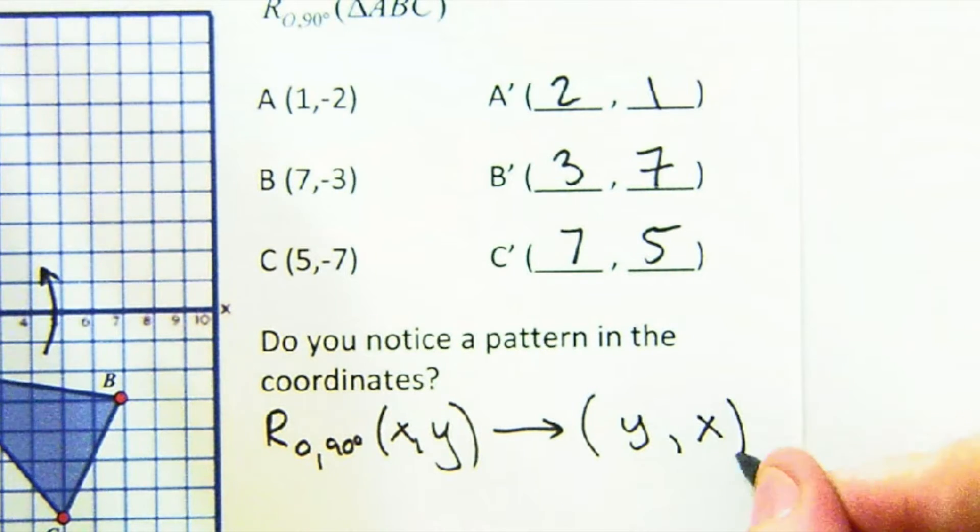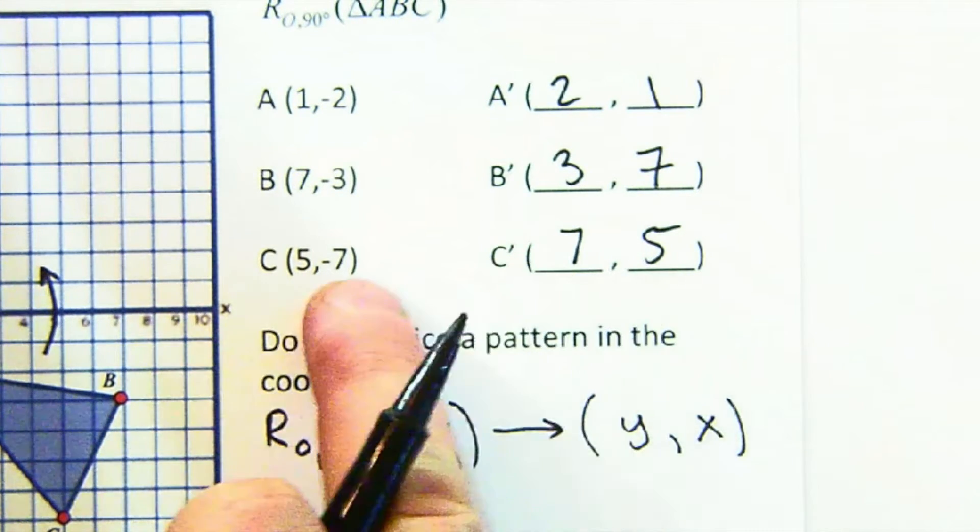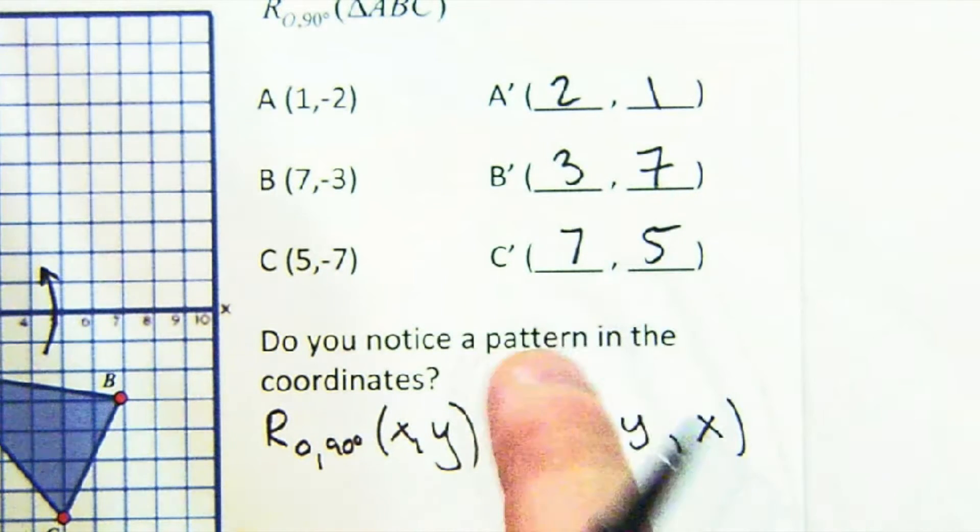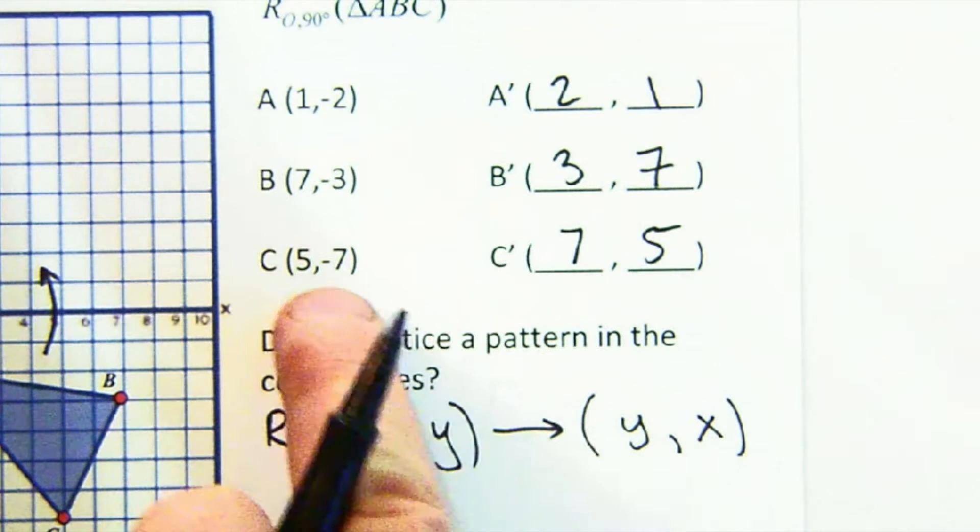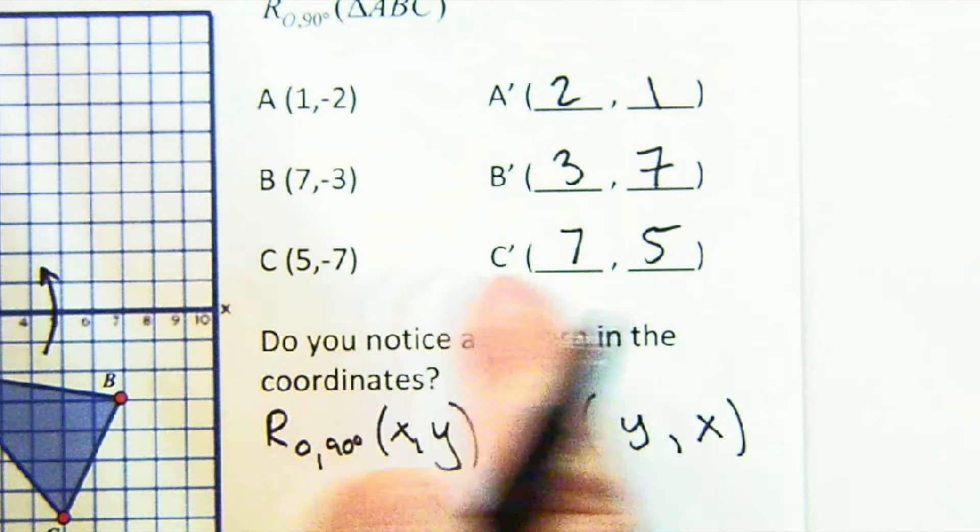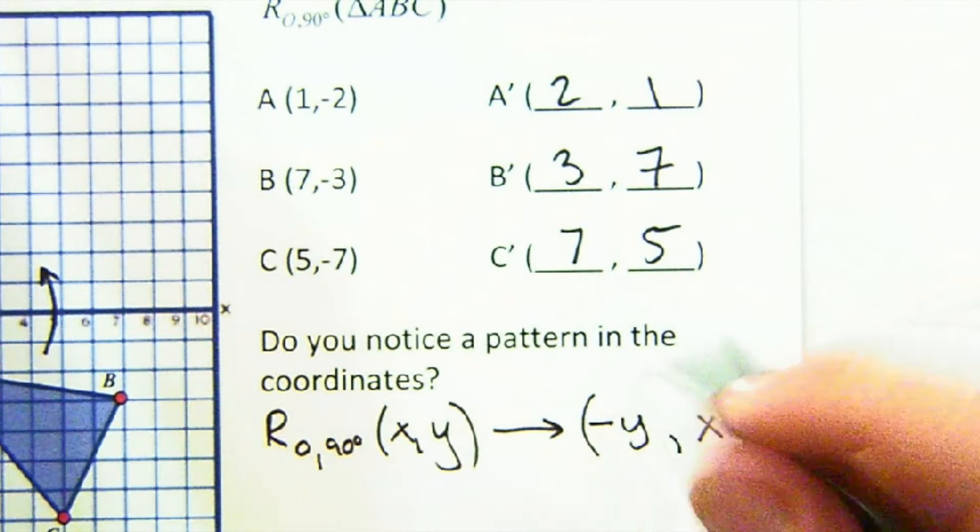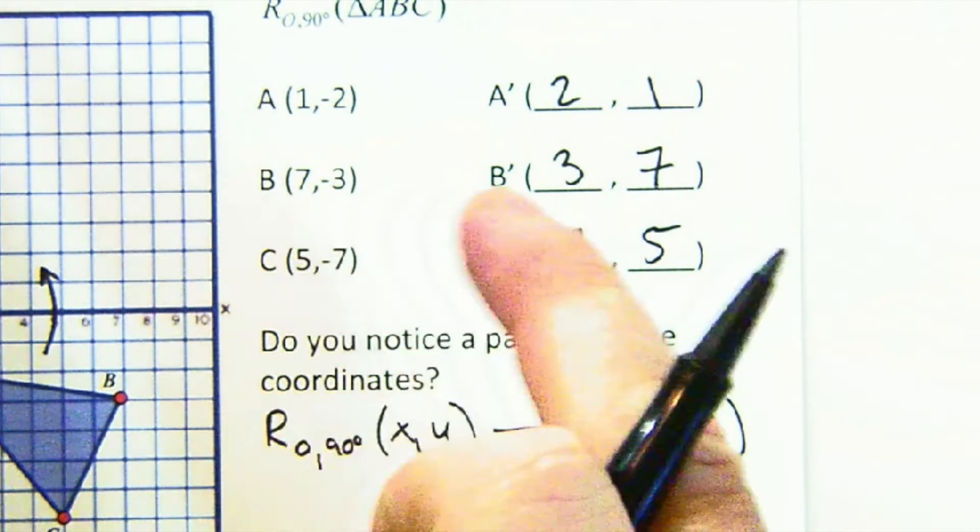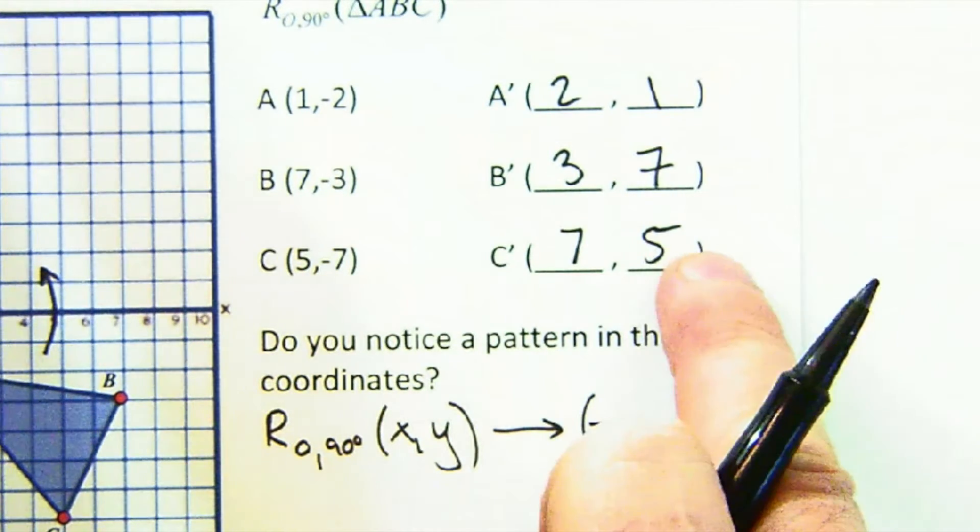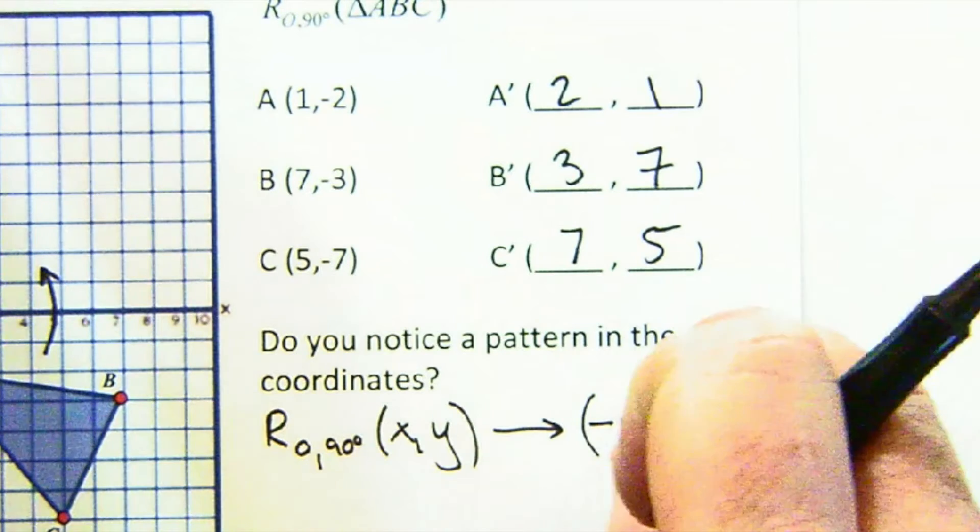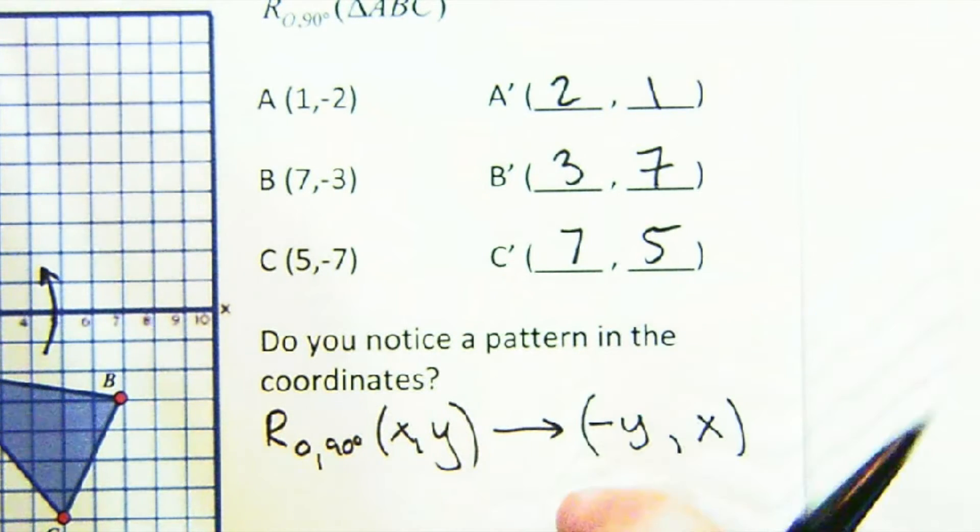Almost. See how the 5 moved to the back, the 7 to the front and so on? But it's not just simply switching. This would be a reflection over the y equals x line. Notice that this negative 7 when it moved to the front became positive. When they get moved to the front, when the old y value becomes the new x value, it negates it and changes it. That one's kind of tricky.